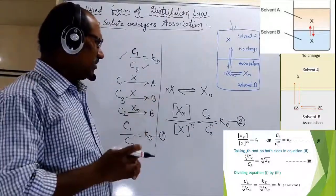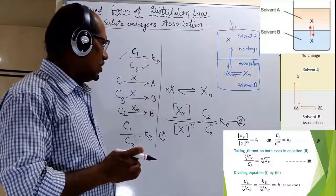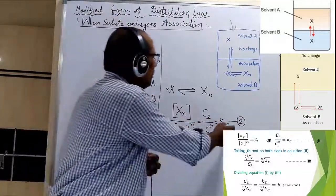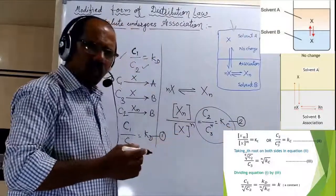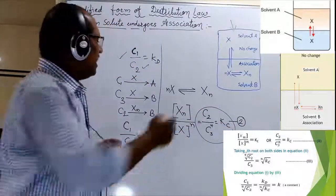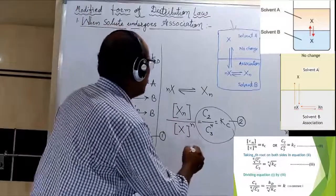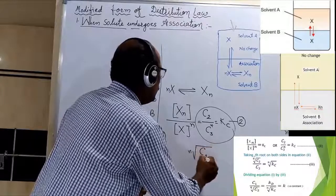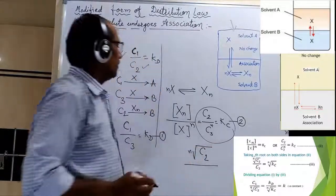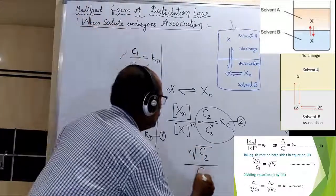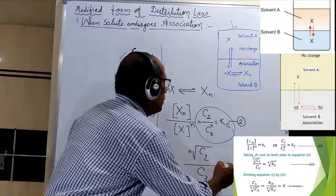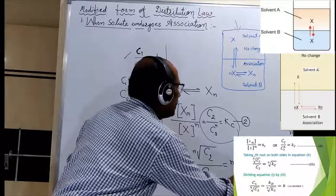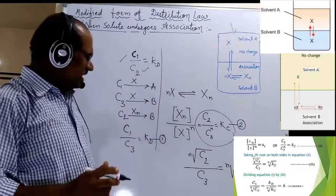Taking the Nth root of both sides of this equation, we get the Nth root of C2 upon C3 is equal to the Nth root of Kc.